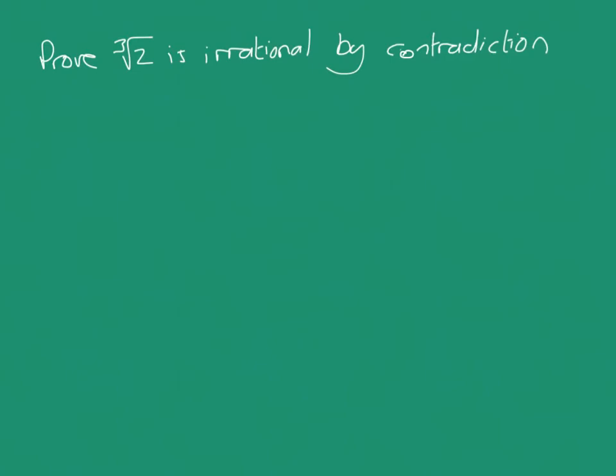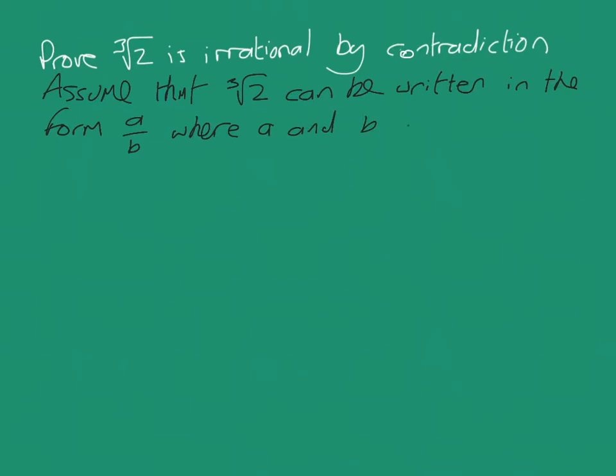Okay, let's have a look at the proof that cube root of 2 is irrational by contradiction. So we assume that the cube root of 2 can be written in the form a over b, where a and b are integers.